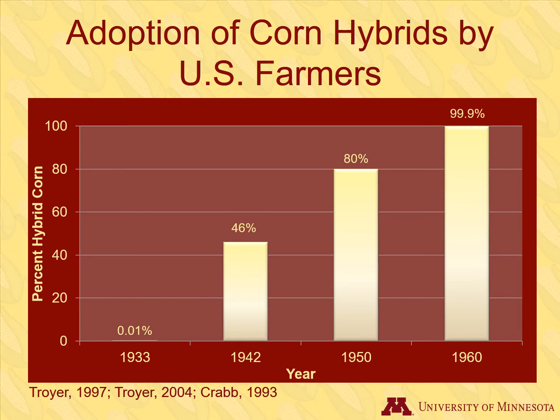However, the yields of hybrids were so incredible that resistance quickly turned to acceptance. In 1933, very few hybrids were grown. By 1942 — less than 10 years later — 46% of U.S. corn was hybrid. It was up to 80% in 1950, and now almost all corn grown from 1960 until today is hybrid.